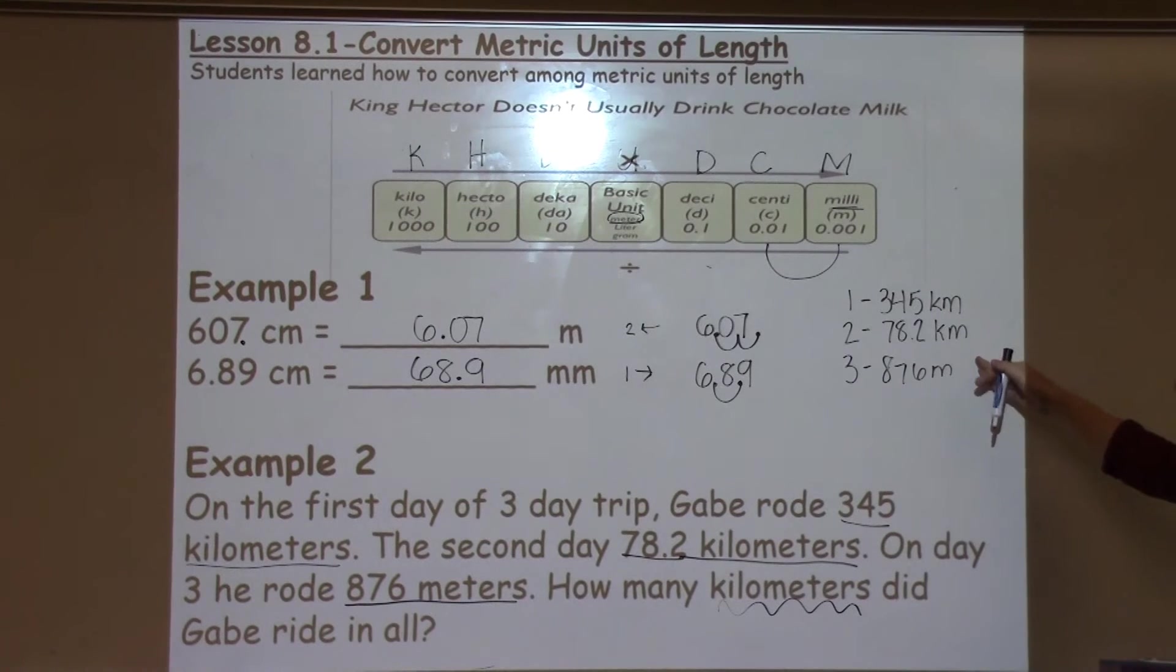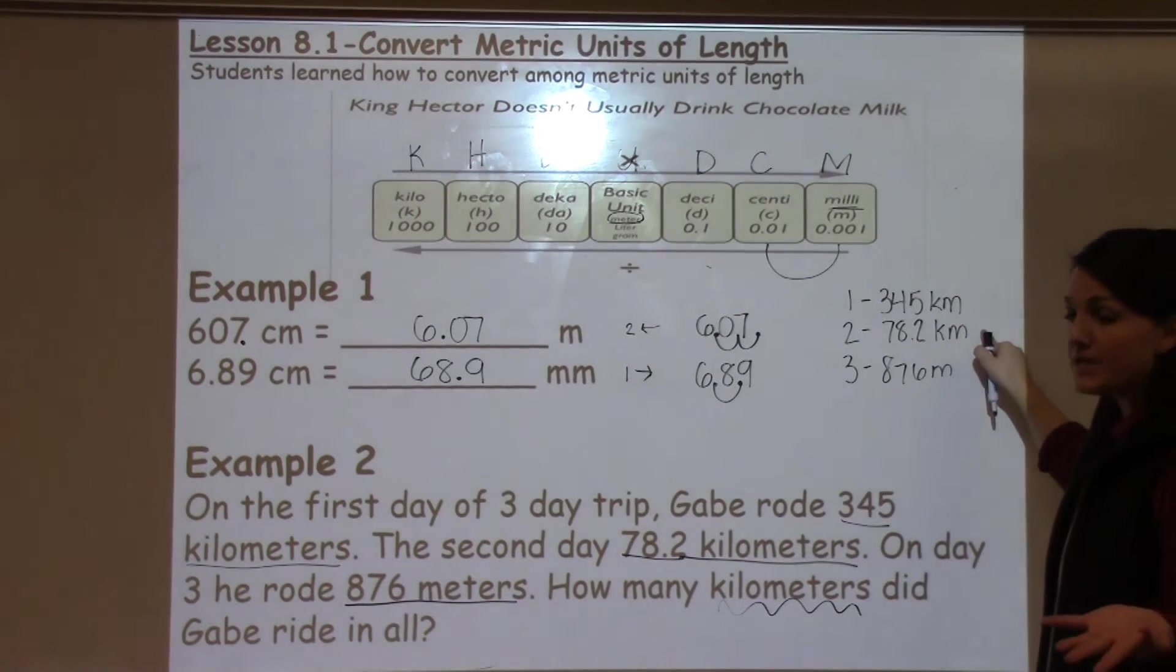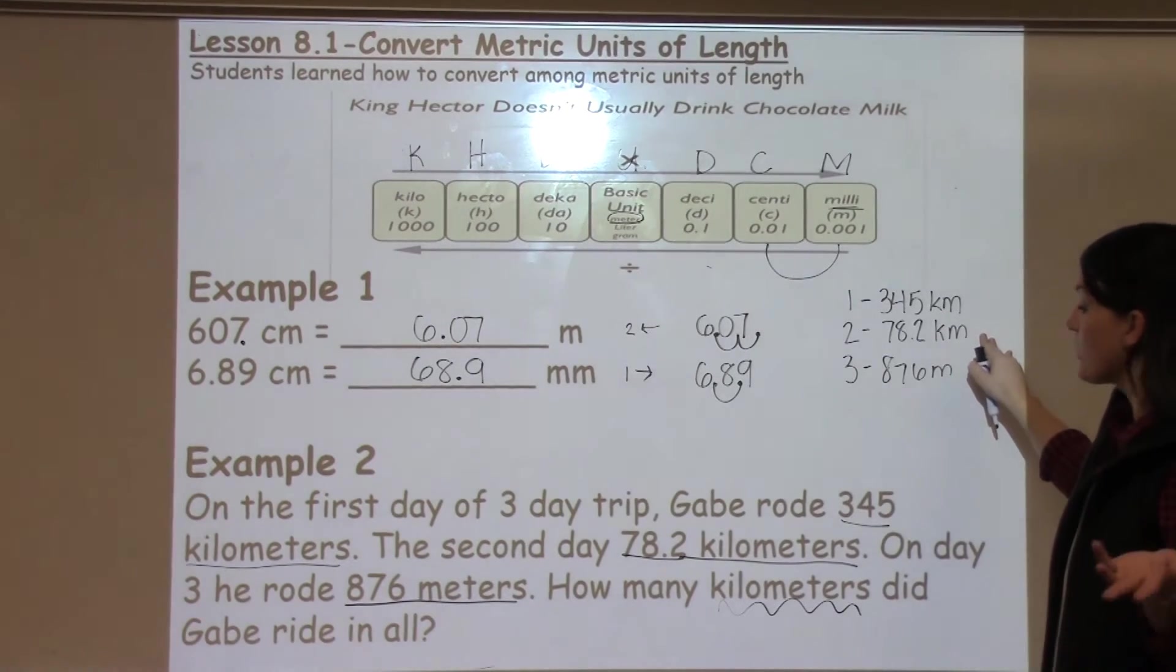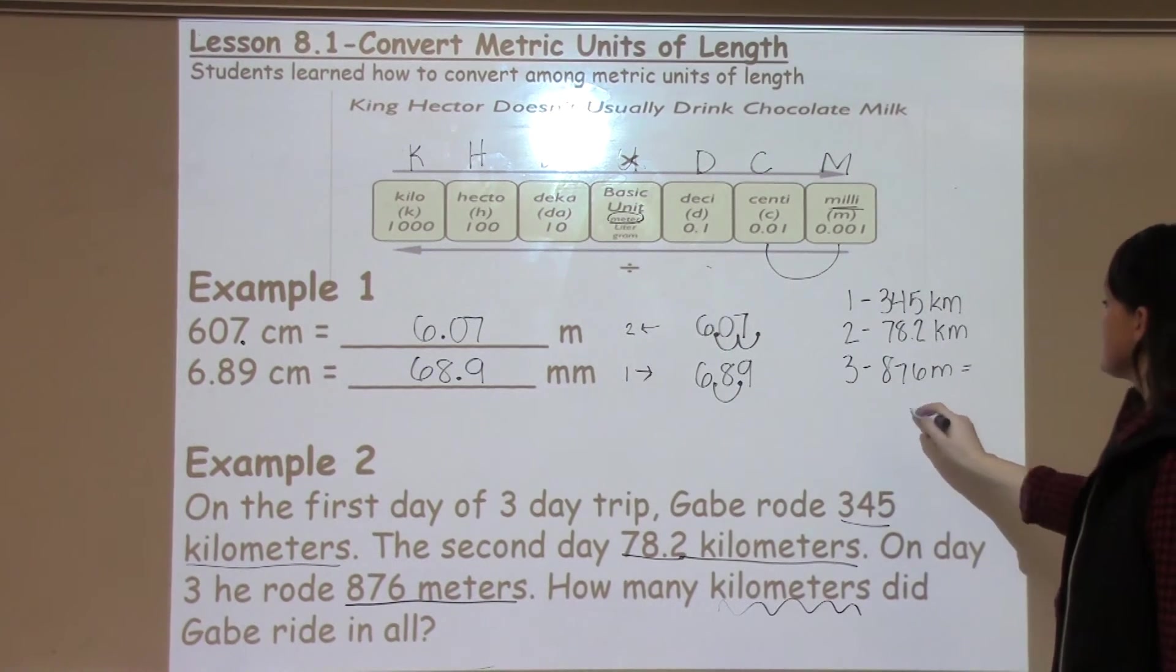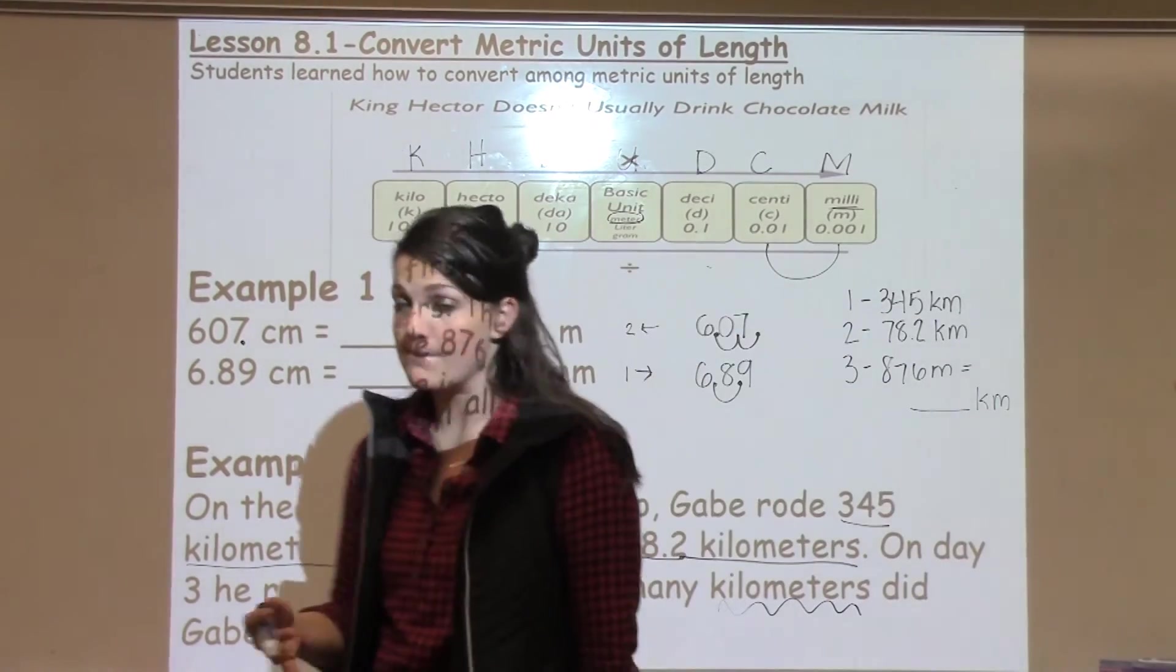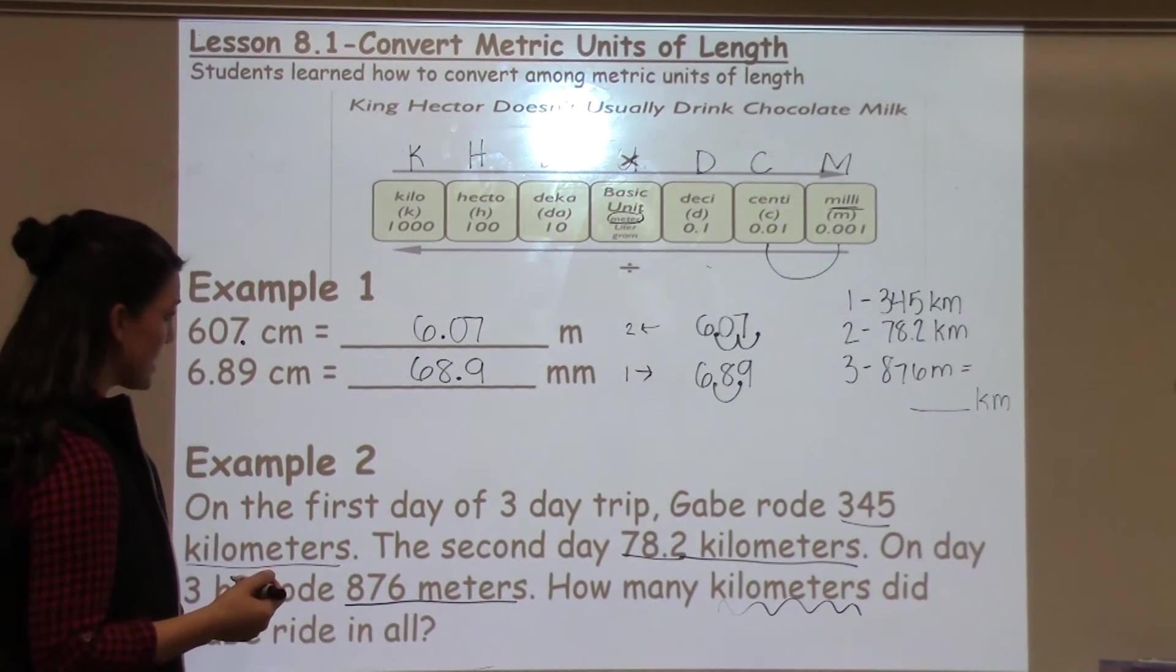Now when I'm looking here, I notice that on day one and day two they're already in kilometers, so I don't have to change them to kilometers because they already are kilometers. But I will have to work with the 876 meters and change that to kilometers before I can go ahead and add them all together to figure out how many kilometers he rode in all.